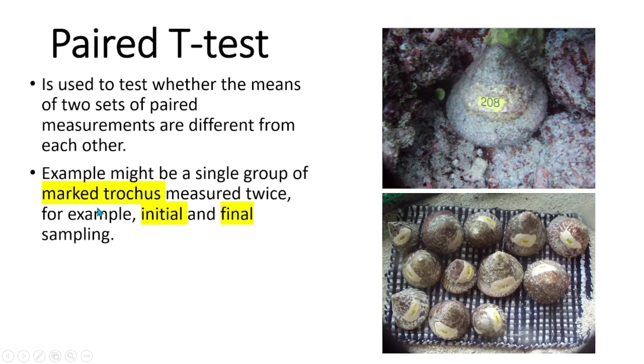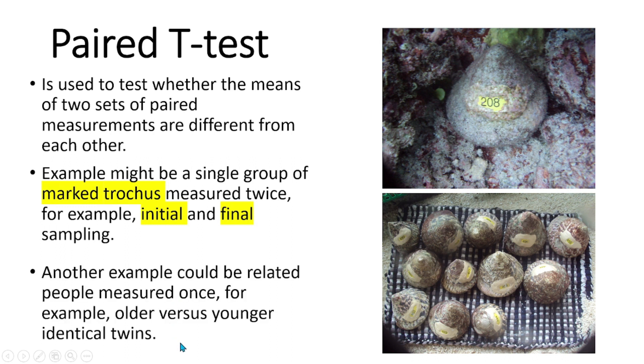For example, we can compare the initial and final measurements of the marked tracus. Another example could be related people measured once, for example, older versus younger identical twins.